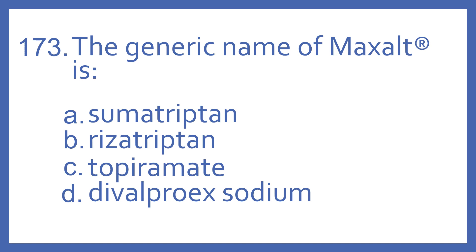Number 173. The generic name of Maxalt is: A, Sumatriptan; B, Rizatriptan; C, Topiramate; or D, Divalproex Sodium.